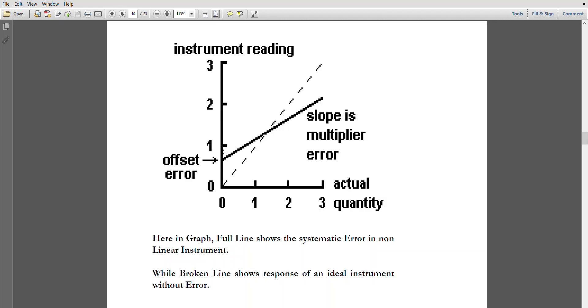So slope is a multiplier of the error in this case. So here again, this clearly indicates how the systematic error happens and how it looks practically when it's plotted.